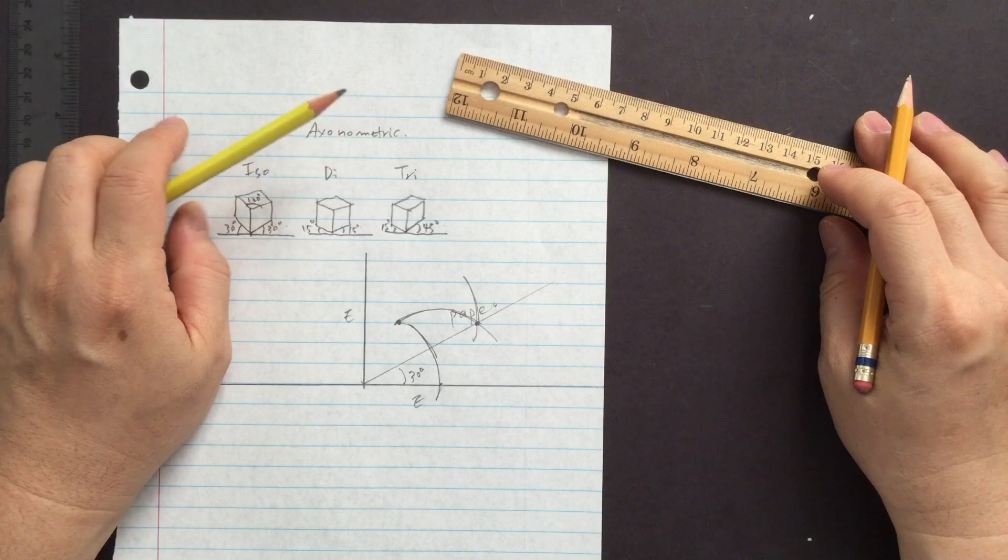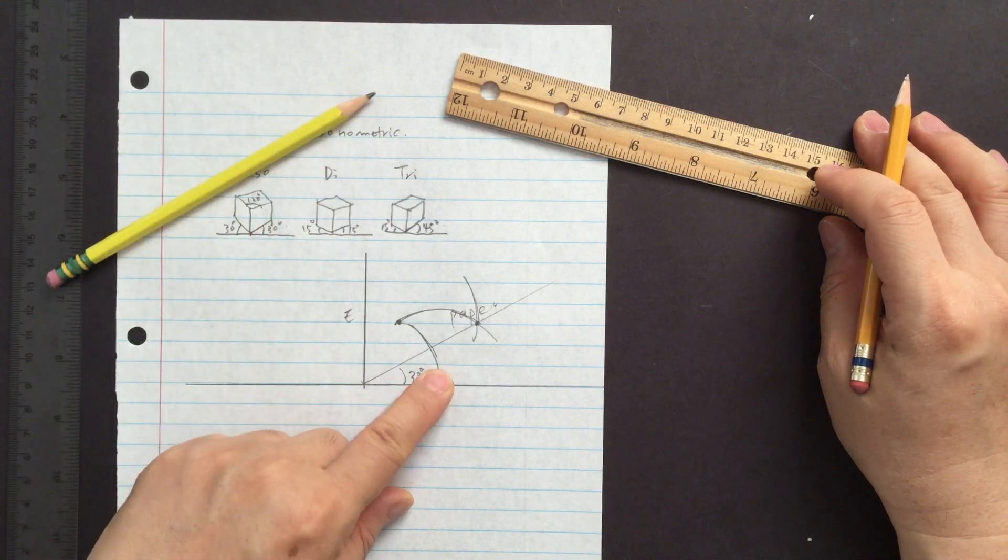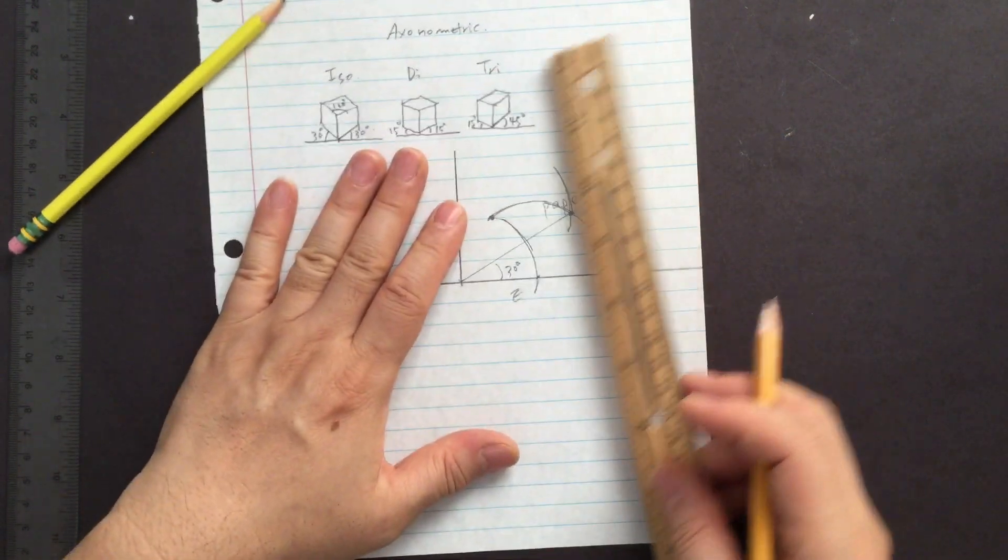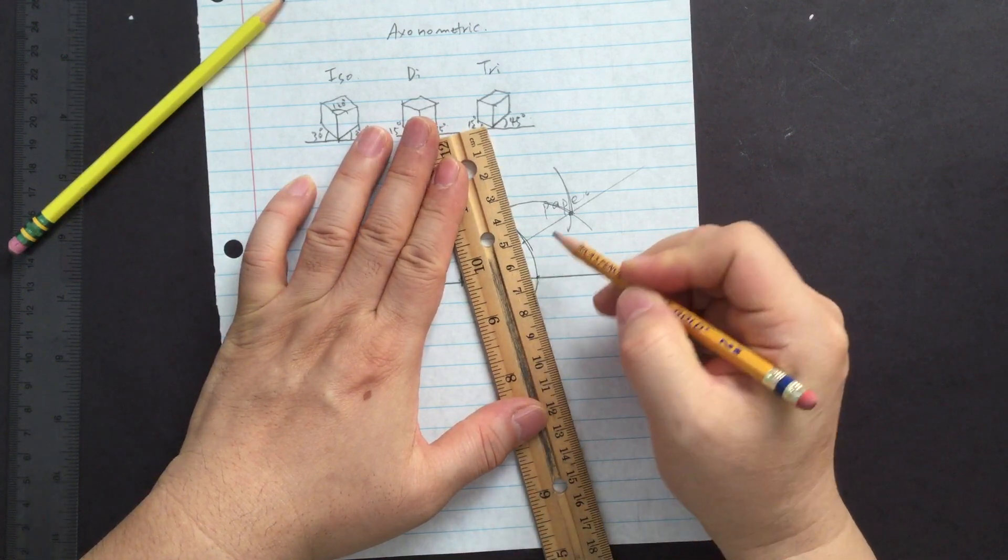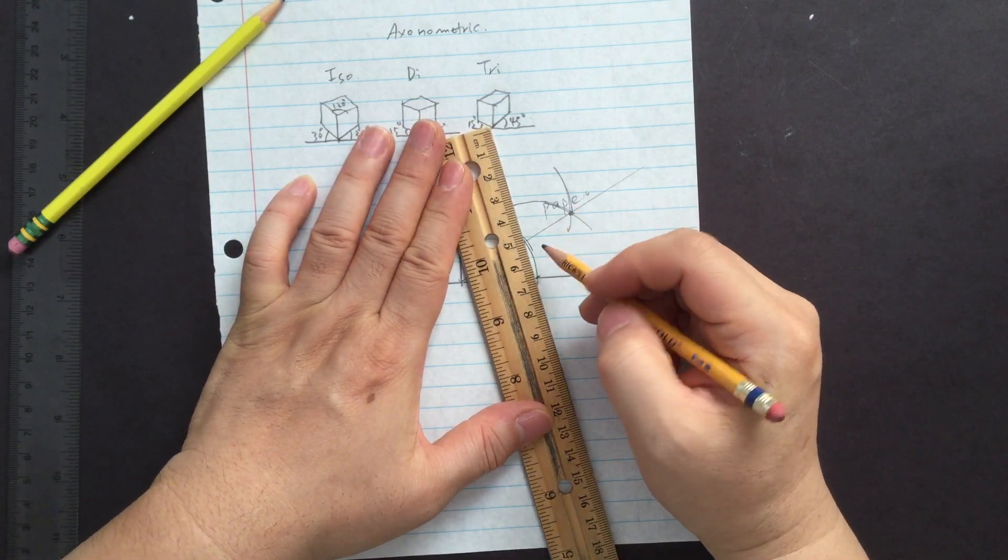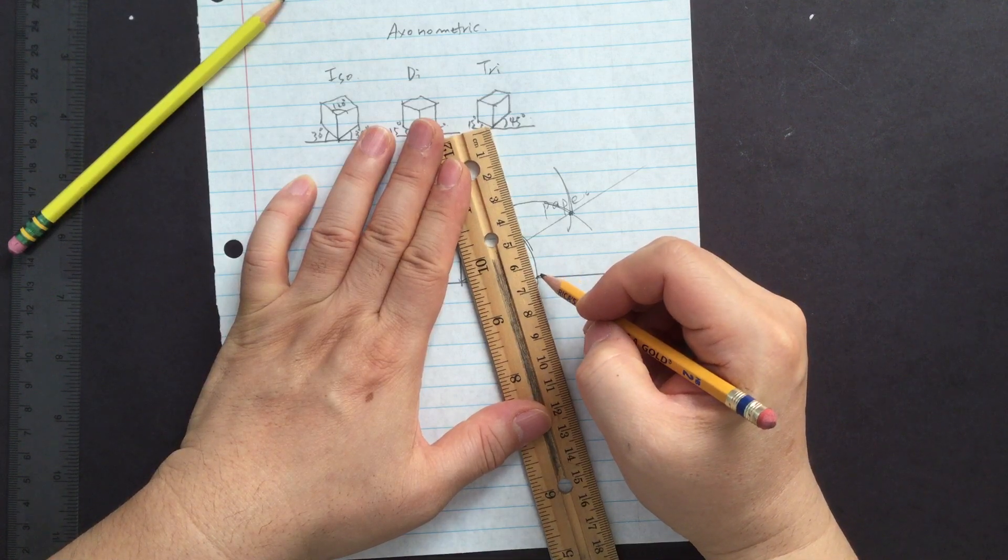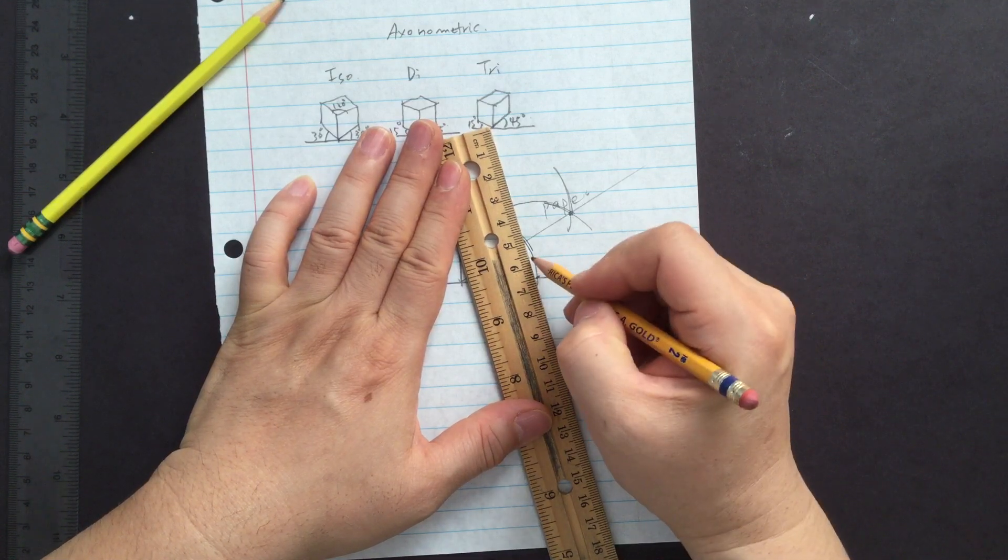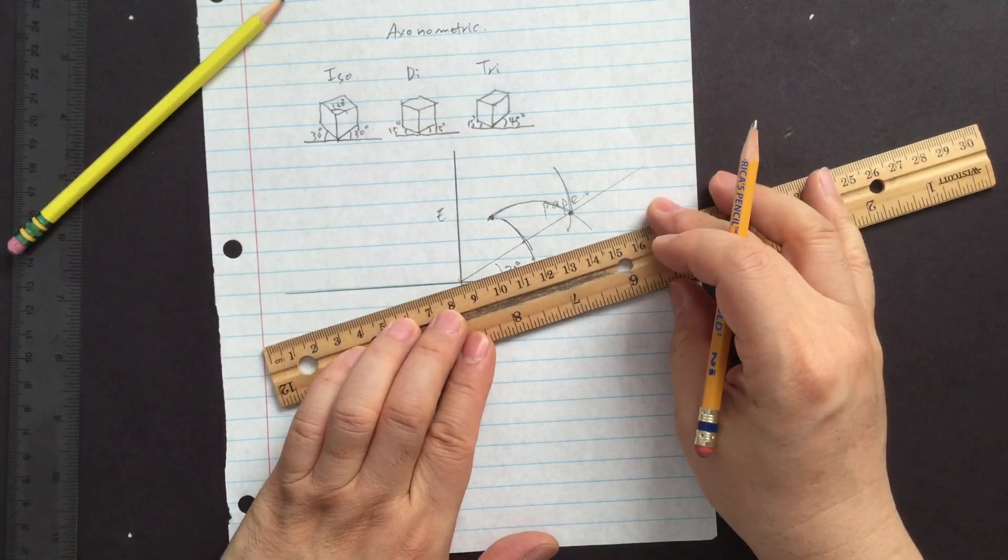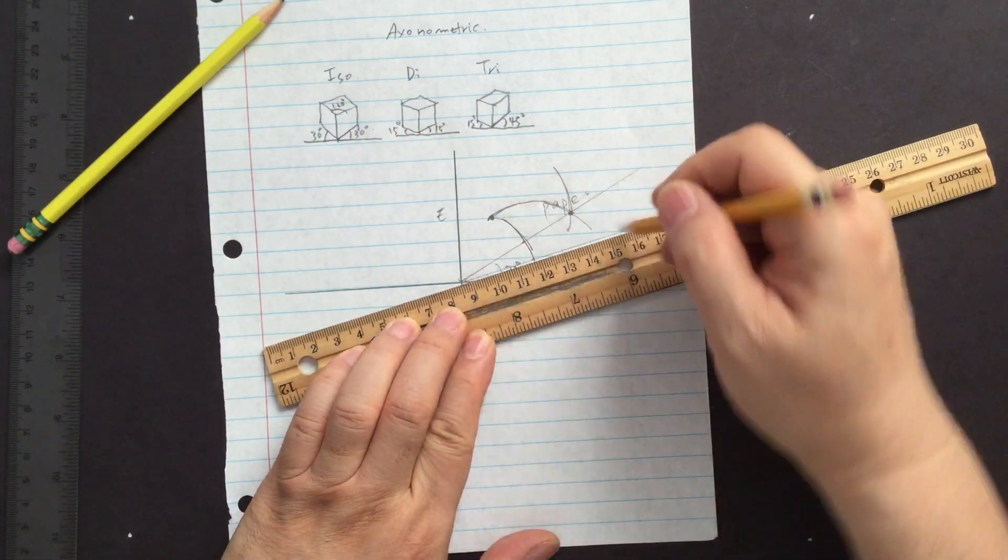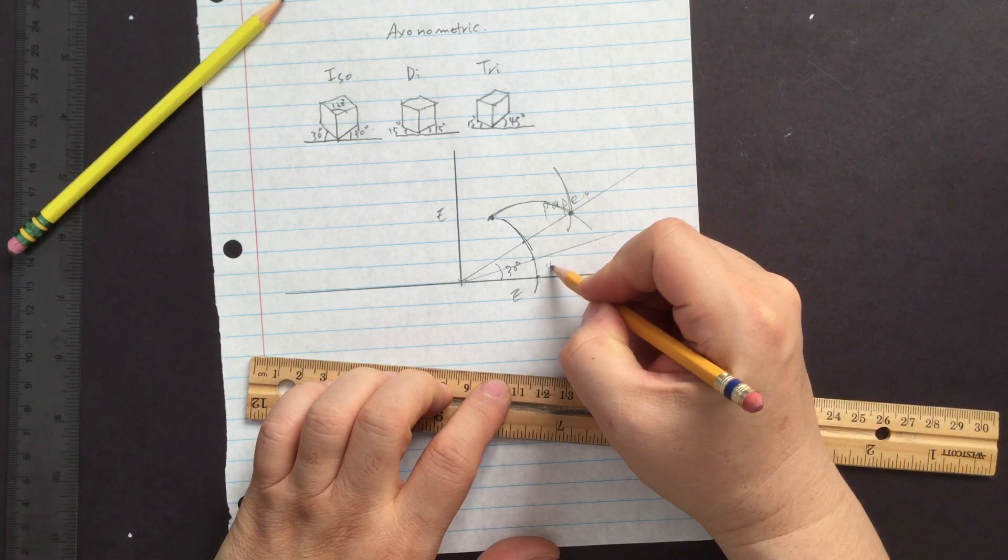And then that's supposedly 30 degree. And then how do you find the 15 degree. All you have to do is corner to corner measure it. So it's come down to about 1.5. So 7.5 centimeter.